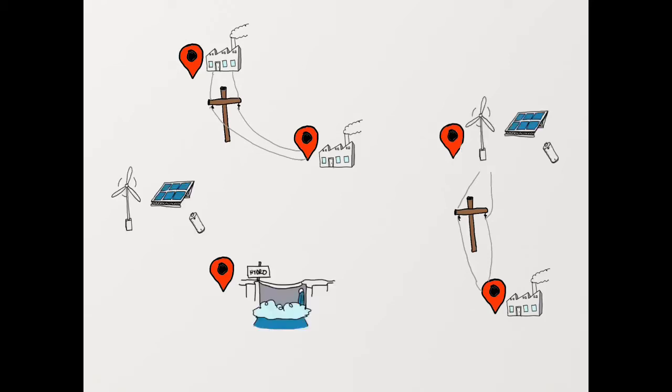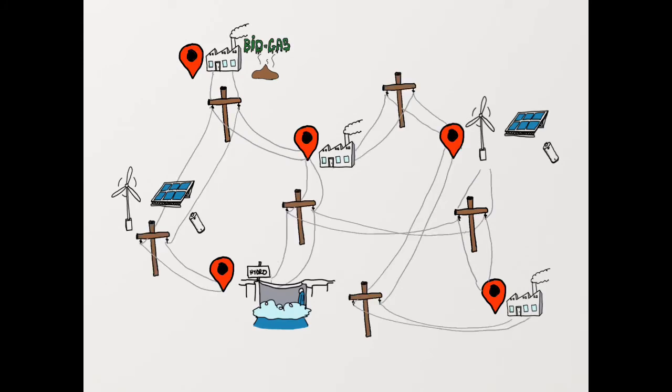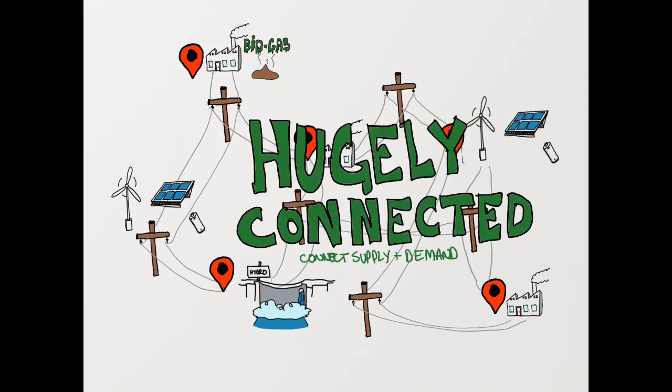As electricity starts coming from different, sometimes cyclical sources, the transmission and distribution system needs to behave in a way to help balance the supply from the generators and the demand of end users. One way to do this is to connect generators to different end use locations at a big scale. If it's day in one spot, the solar energy can be harvested and supplied to another location where it might be dark. The more connected the grid is, the more likely that supply and demand can start to be balanced out.